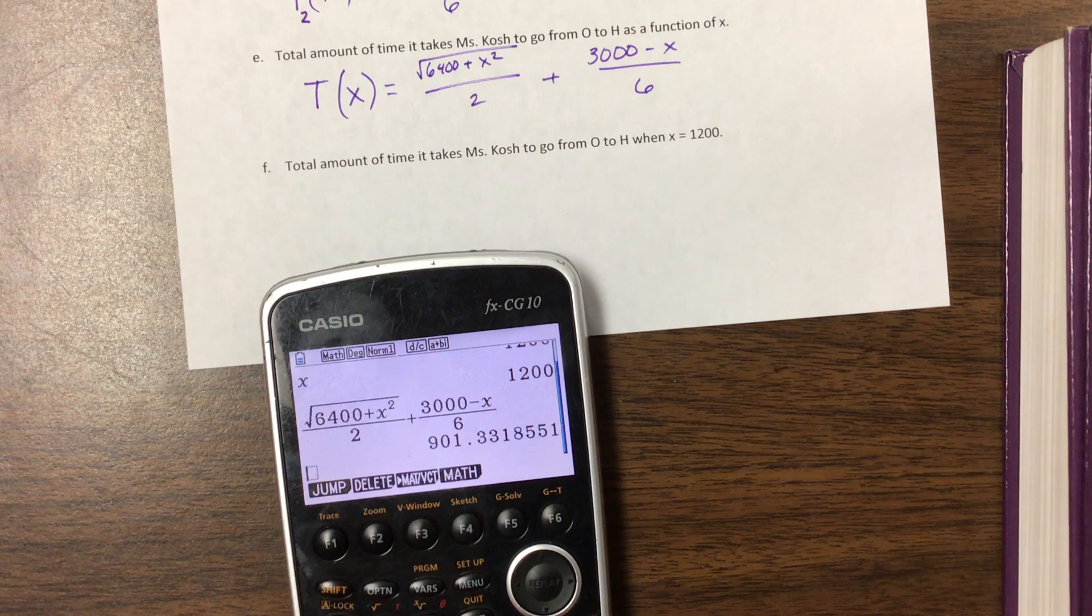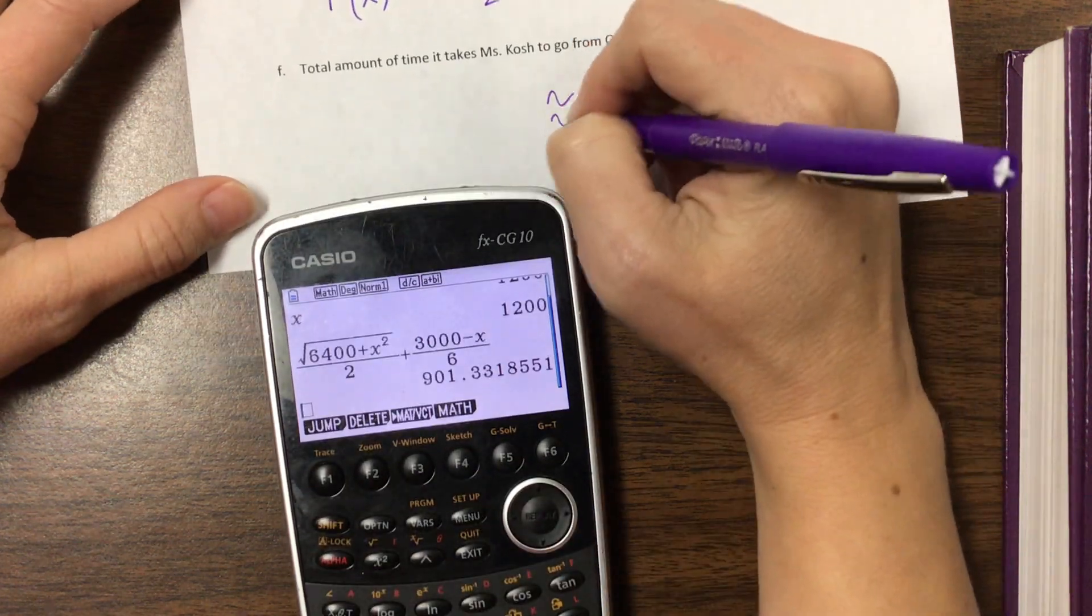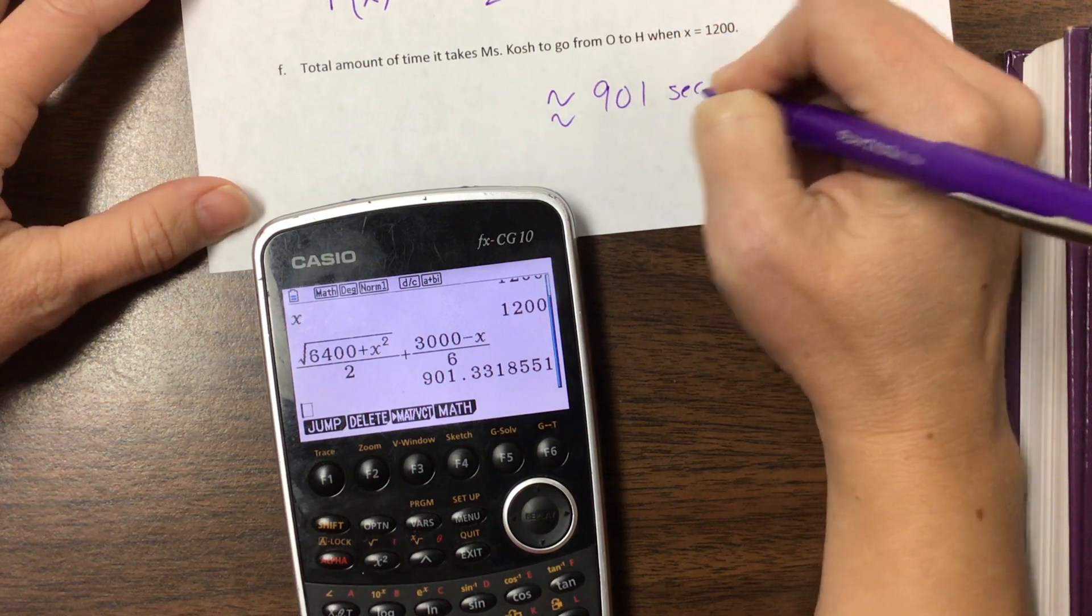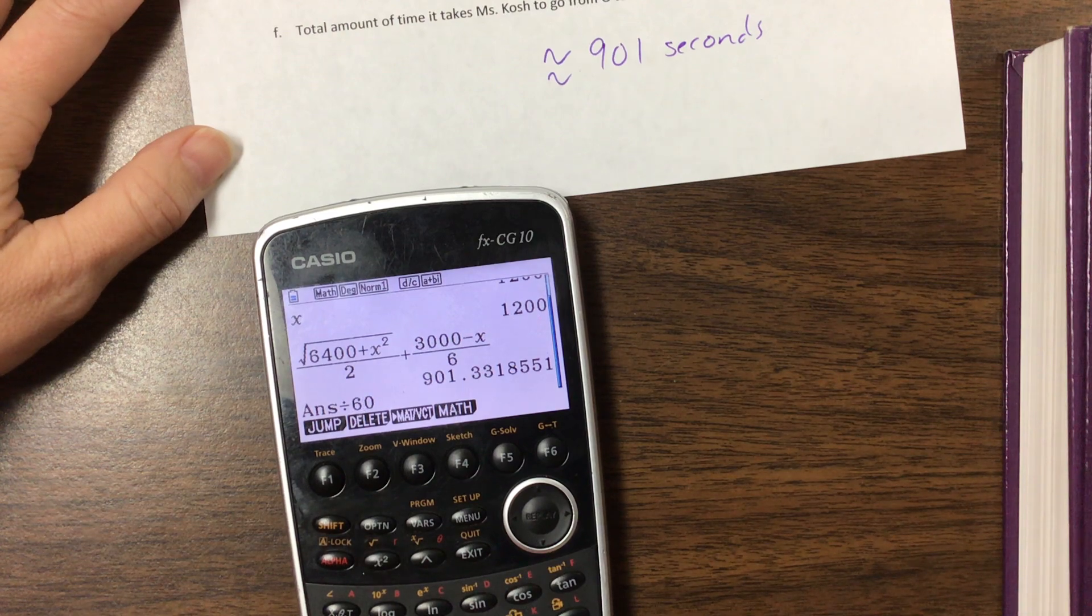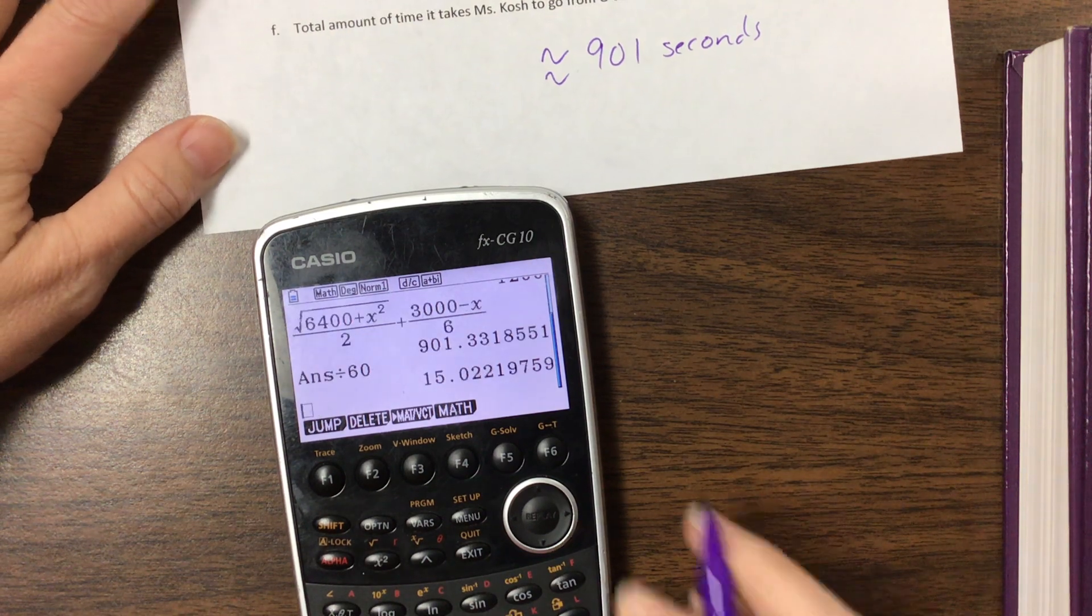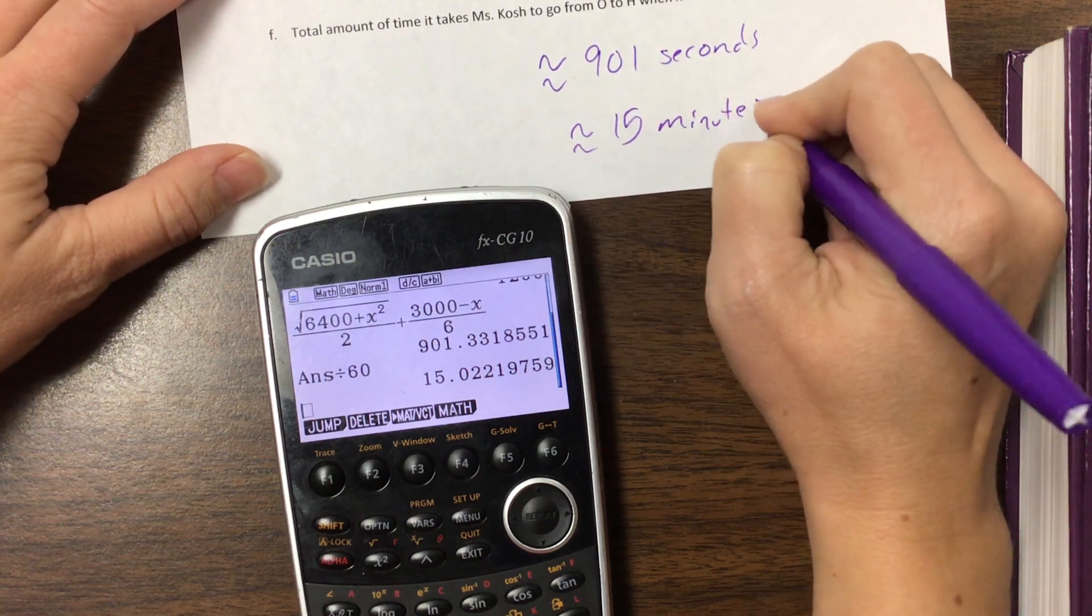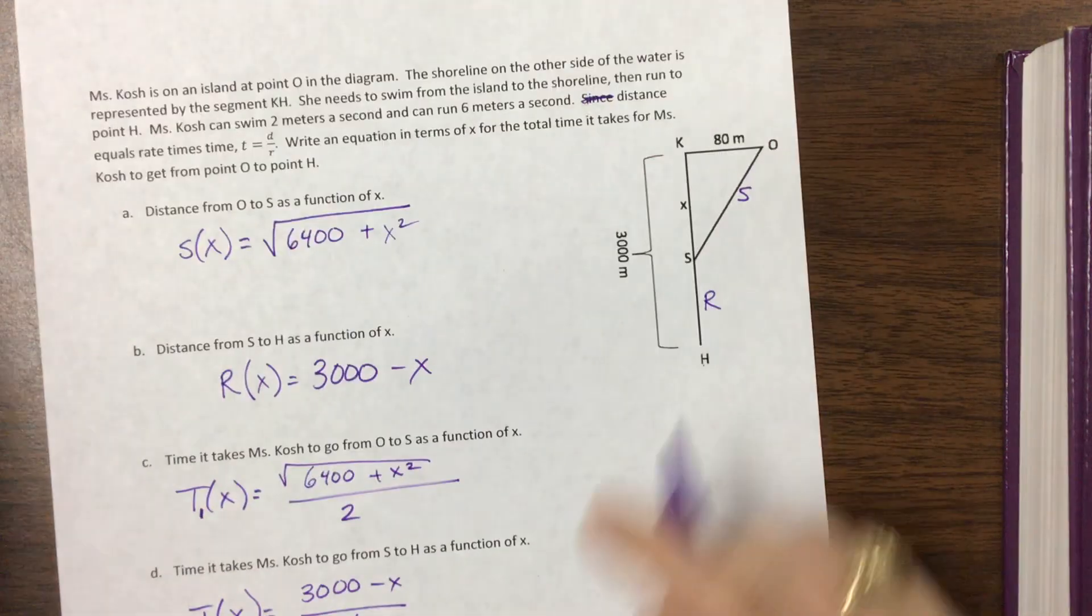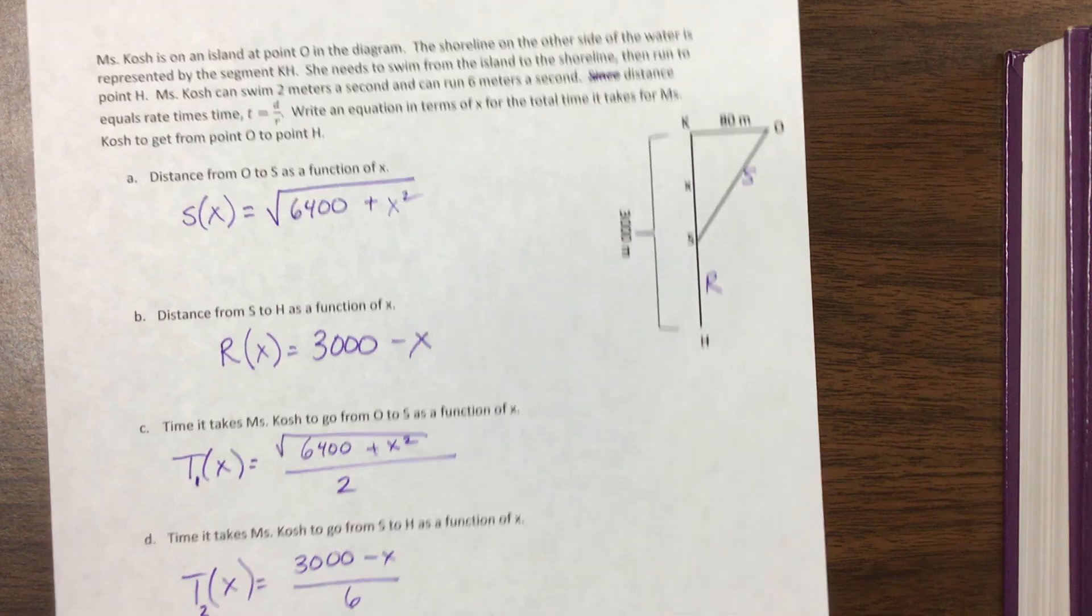Okay and so that's the total amount of time and these were in terms of seconds. So it's about 901 seconds which is divide that by 60, it's about 15 minutes. It's going to take me about 15 minutes if this distance right here is 1200. So then I'd swim and then run.